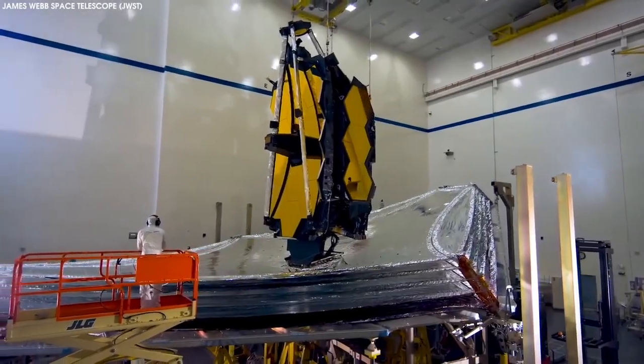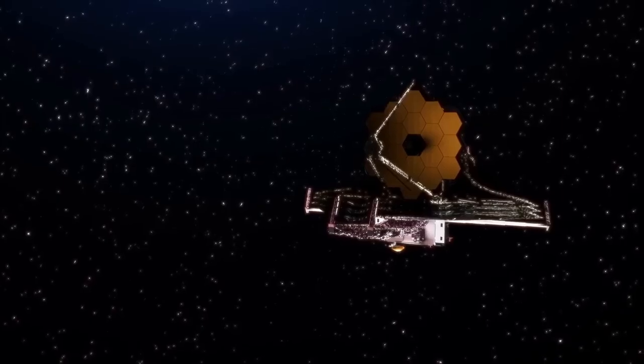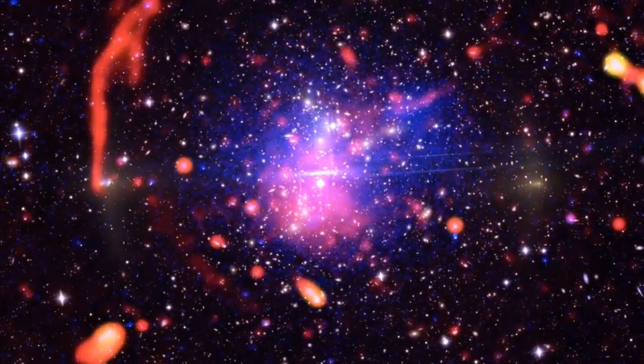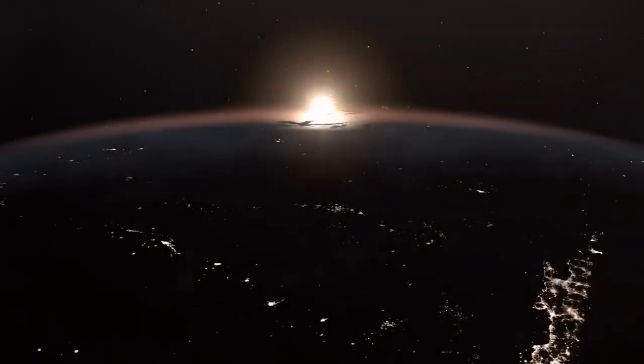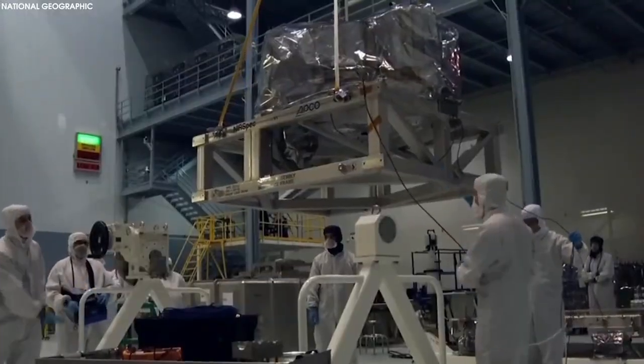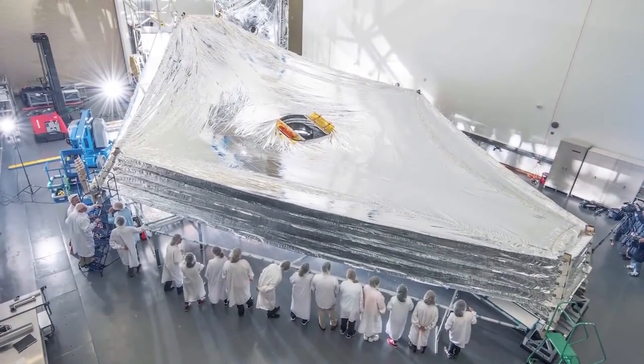The first photos from James Webb went out to the world on July 12, 2022, and they were stunners. The clarity and level of detail are unprecedented. Seeing the telescope's new views of some familiar objects, from the photographed Carina Nebula to the planet Neptune, feels like putting on new glasses with a stronger prescription.